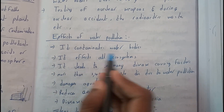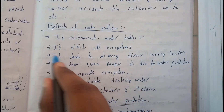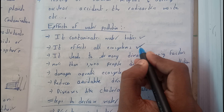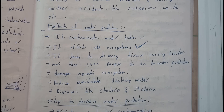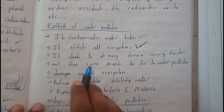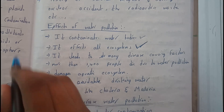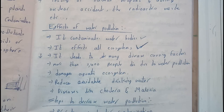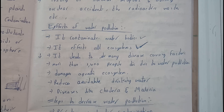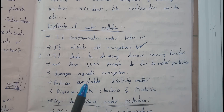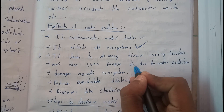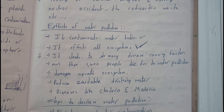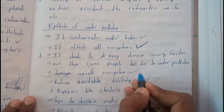Water pollution contaminates water bodies and affects all ecosystems, including marine ecosystems — the animals and plants that live underwater are greatly affected. It also leads to many disease-causing factors. Once polluted or stagnant water is formed, there is a high chance of mosquitoes growing, which increases many diseases. More than 1,400 people die due to water pollution-related diseases.